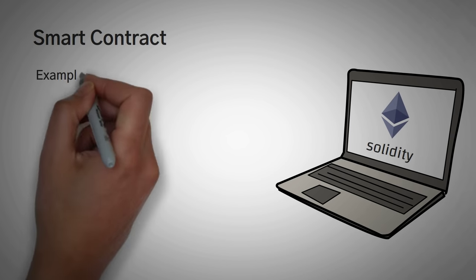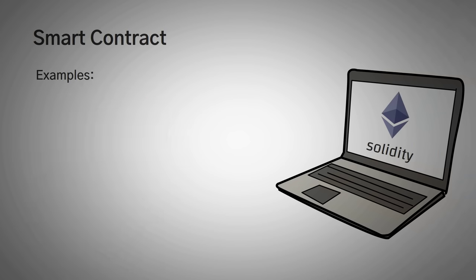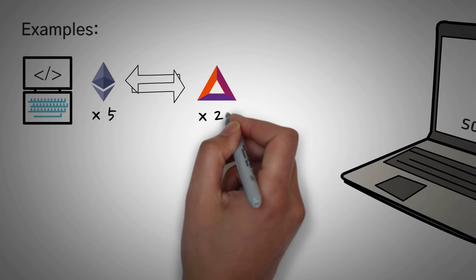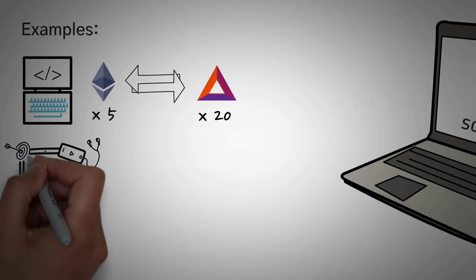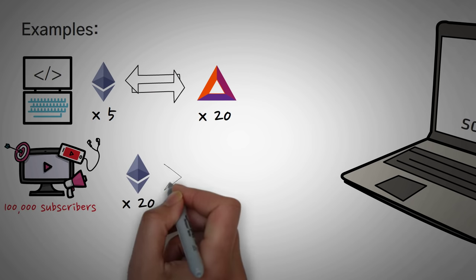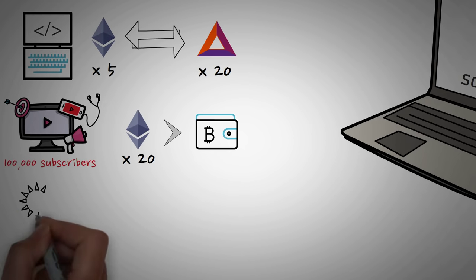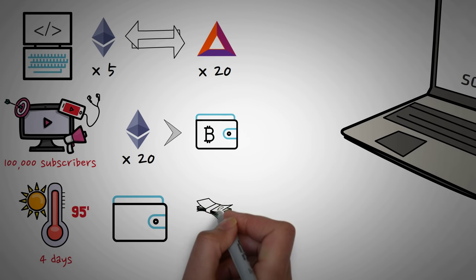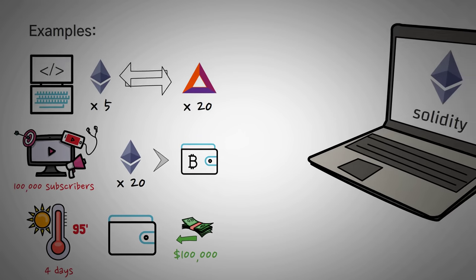So let's go over some examples of purposes of smart contracts. You could write a piece of code that says, if you give me 5 Ethereum, in turn, I will give you 20 basic attention tokens. If you have at least 100,000 subscribers by the end of the year, 20 Ethereum will be added to your account. And if the temperature is over 95 degrees for more than 4 days in a row this year, Farmer John's account will receive $100,000 as crop insurance.